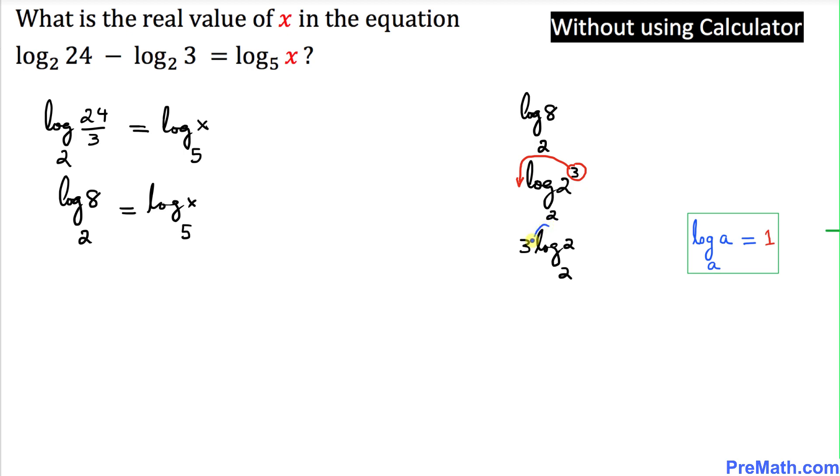And now let's focus on this part, log of 2 with a base 2. We are going to use this fact. This states that if this argument and the base are the same, it is always equal to 1. Since our base and the argument is 2, so that is going to give us 1. So I can write 3, and this thing is 1. 3 times 1 is simply 3.